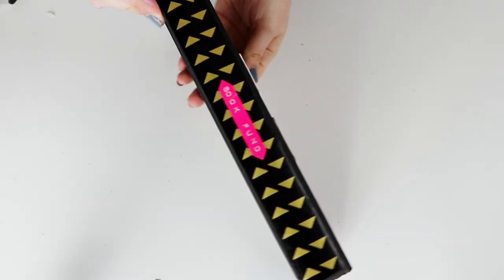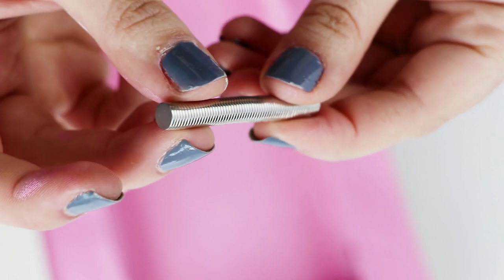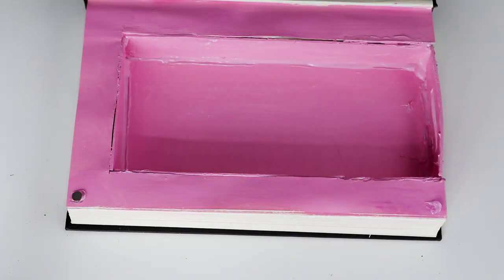Once it's all decorated, we just need to make sure that it stays closed. For this, use some thin, small magnets. Glue them to the two corners of the book.